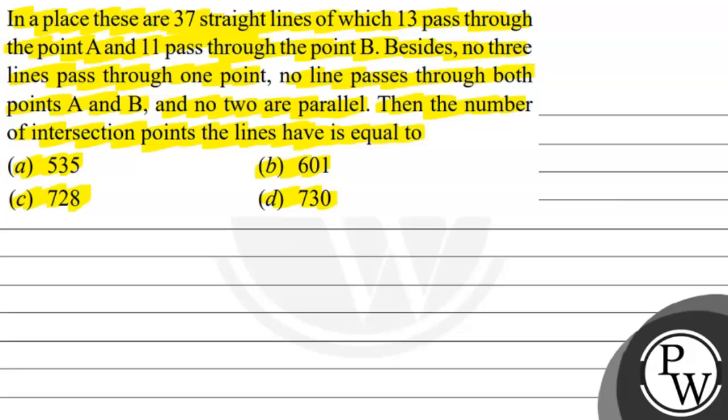So, we have given that in a place there are 37 straight lines, and we have 13 lines pass through point A, 11 lines pass through point B, and no 3 lines pass through a single point. And no line passes through both point A and point B, and no 2 lines are parallel. Then, the number of intersection points of the lines we have to find.